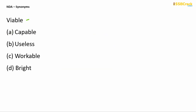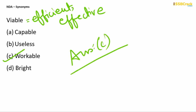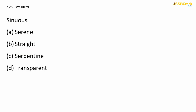The next word is viable. Something viable is something which is efficient, effective, possible, or workable. Your answer is option C — 'workable' is the synonym of viable. The next word is sinuous. Something which is sinuous is something which is entwined, serpentine — in other words, like a snake.